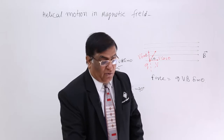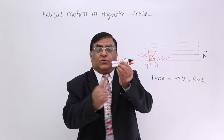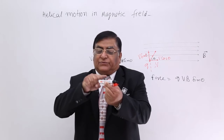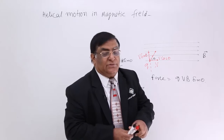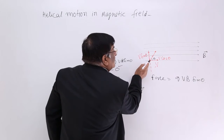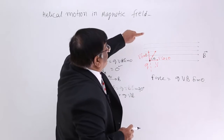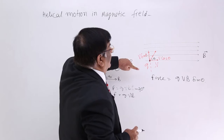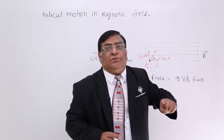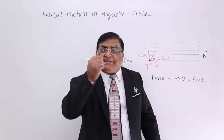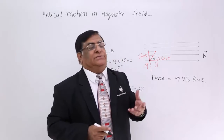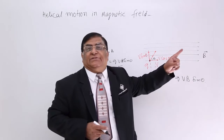Encircling the magnetic field — here is the magnetic field. So when this charge goes here, it will encircle it and come like this, making a circle. The charged particle, because of the V sin theta component of velocity, will make a circle. Because of the V cos theta component, it will keep on moving in a straight line. So this one particle — will it make a circle or move in a straight line? The answer is it has to do both actions: move in a circle and move in a straight line.